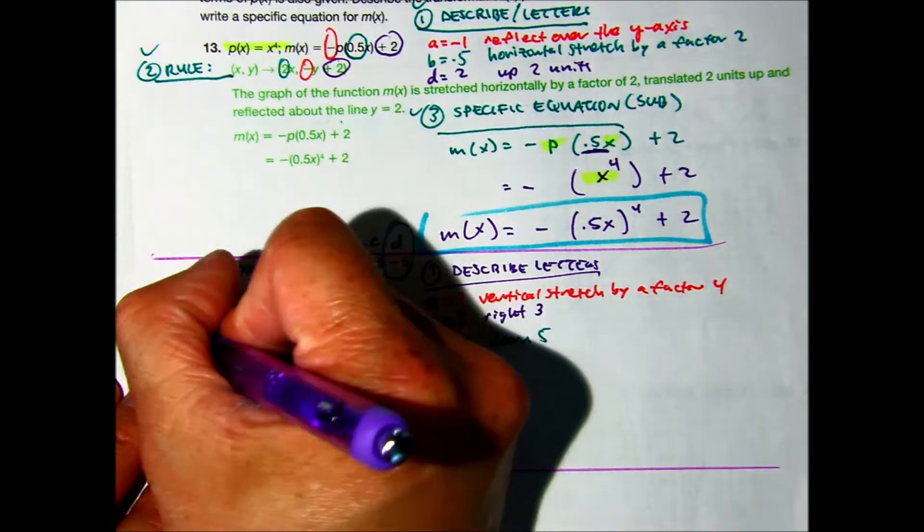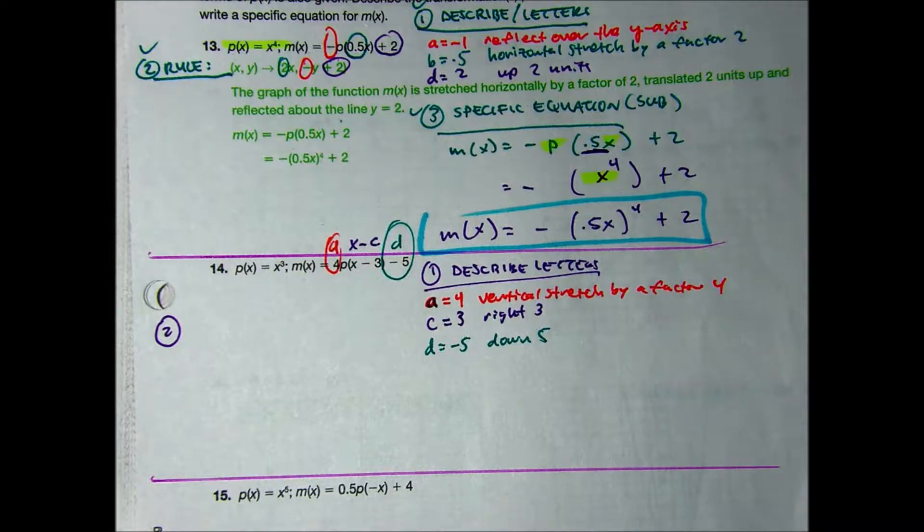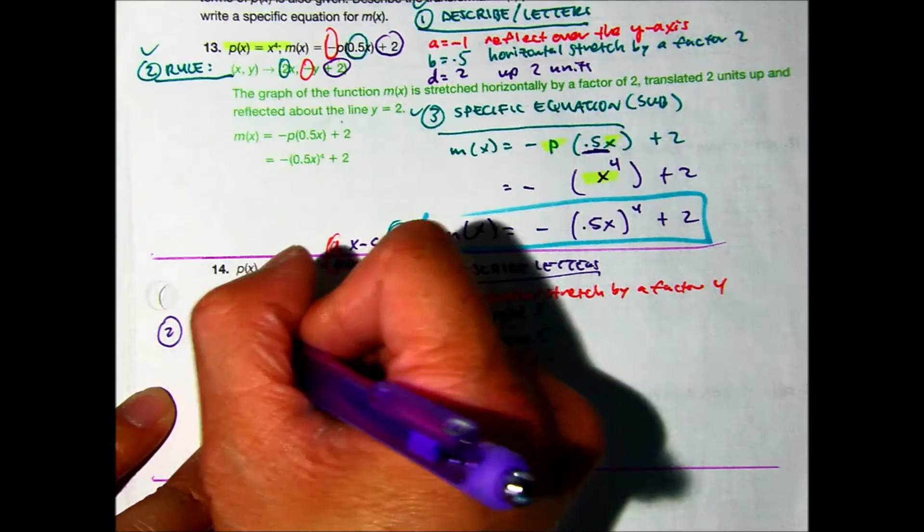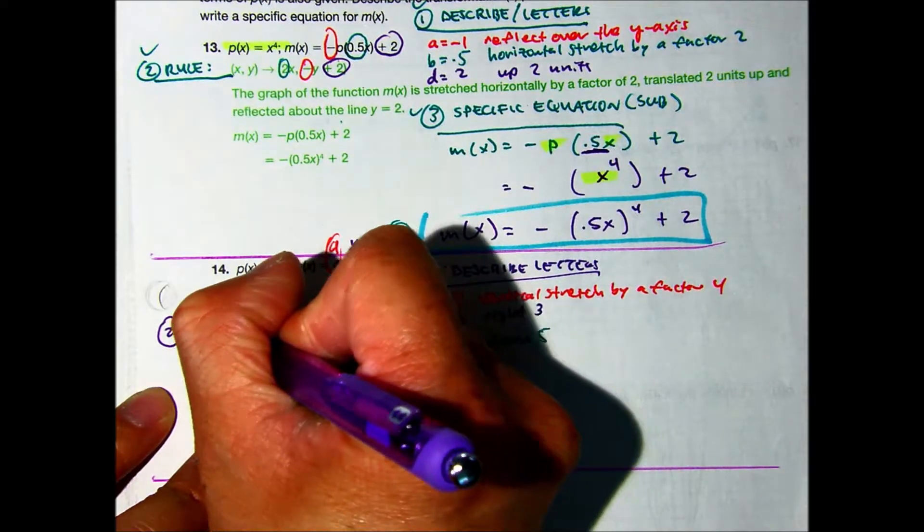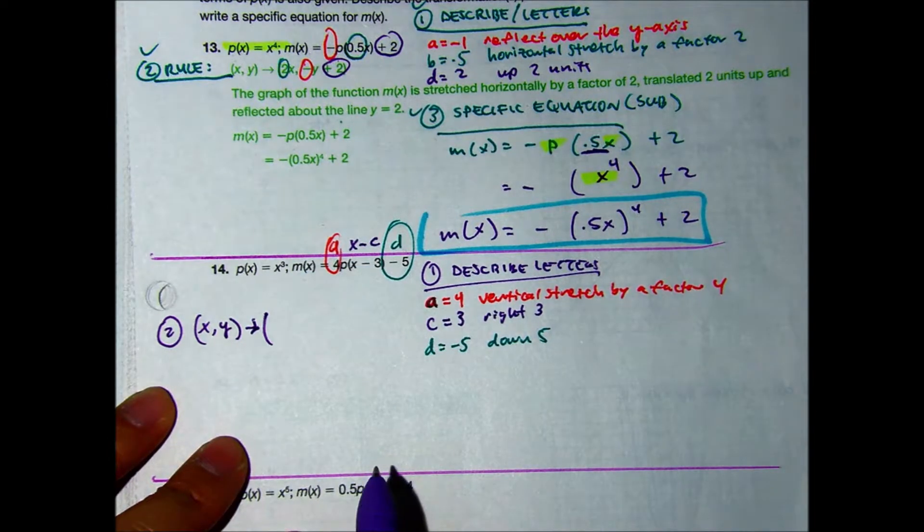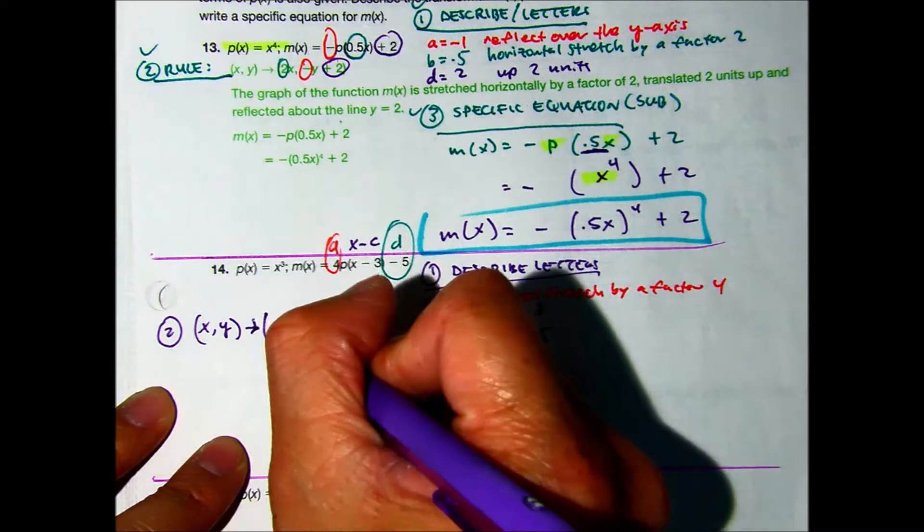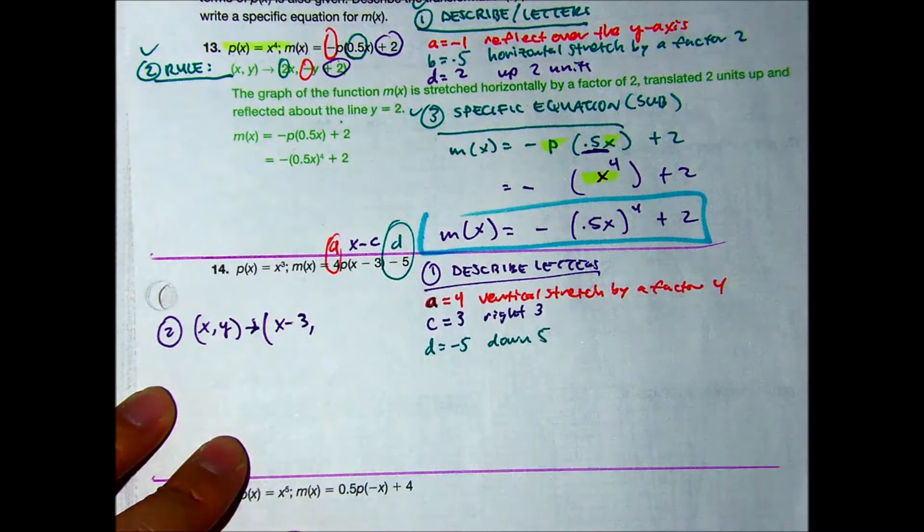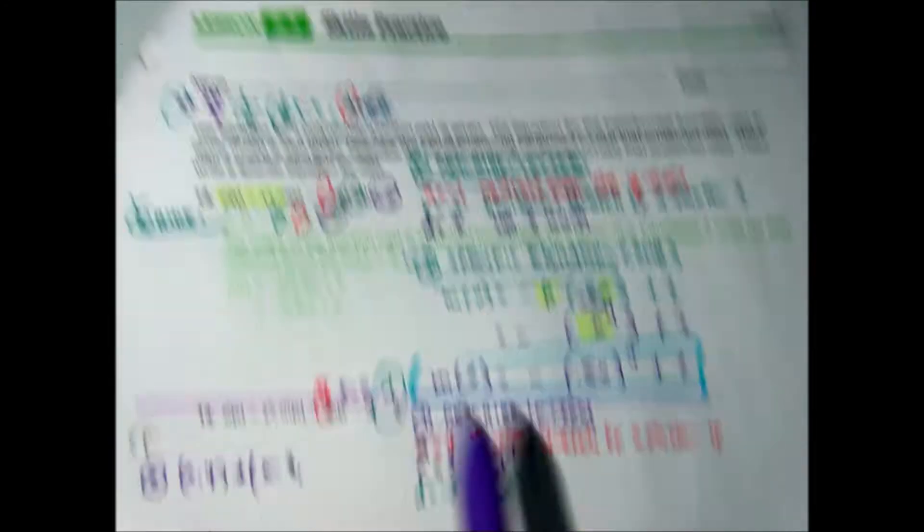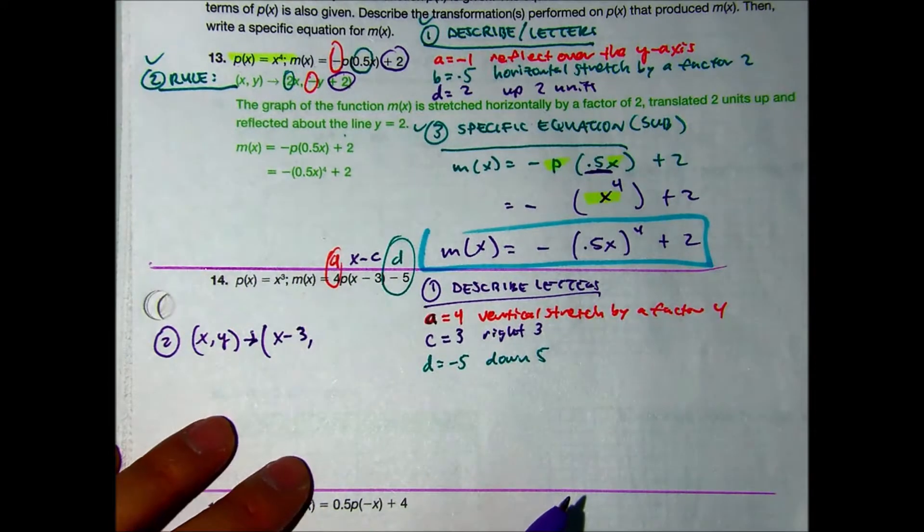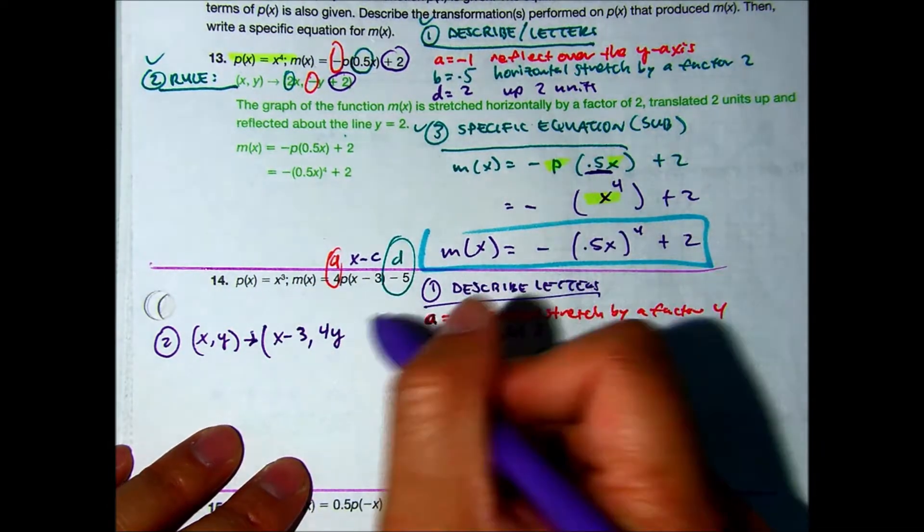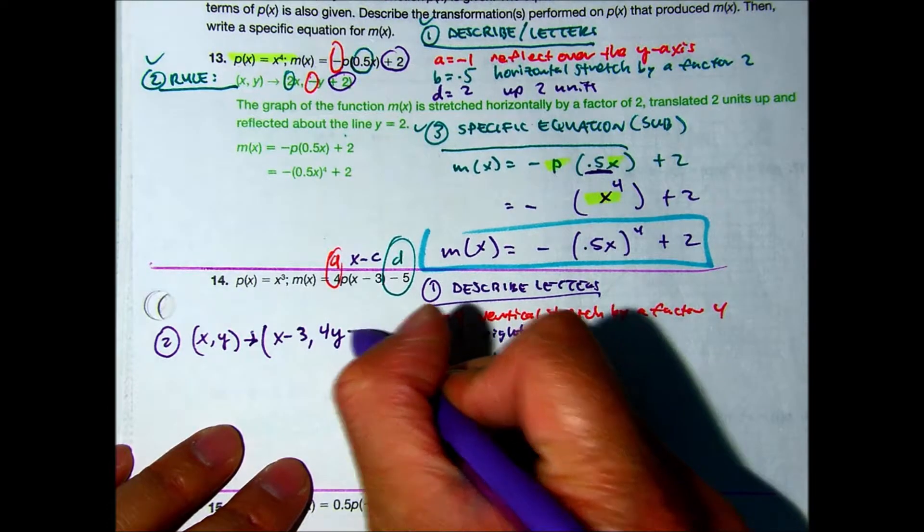Let's create a rule now. Remember, our rule is one over B, so we don't have a B value. Do we have a C value? So we can write X minus three, right? Remember, the rule says X minus C, so you should have your formula sheet out. What's your A value class? Four. So we have four times Y, what? Minus five. Minus five. So that's my rule.